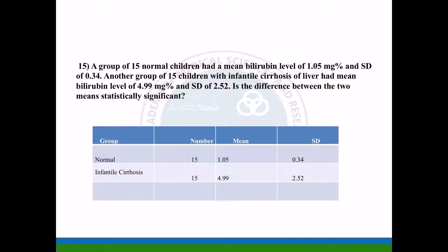Another group of 15 children with infantile cirrhosis of the liver had a mean bilirubin level of 4.99 mg percent and SD of 2.52. Is the difference between the two means statistically significant? The groups are normal and infantile cirrhosis, n = 15 and 15, mean is 1.05 and 4.99, SD is 0.34 and 2.52. Now we will see whether there is statistical significance.